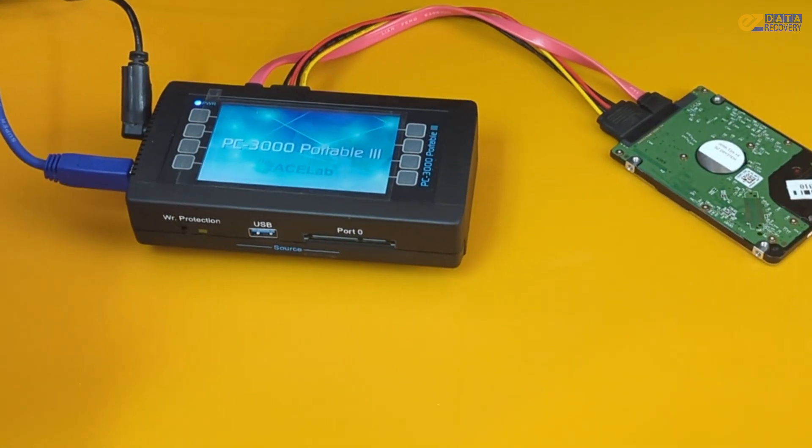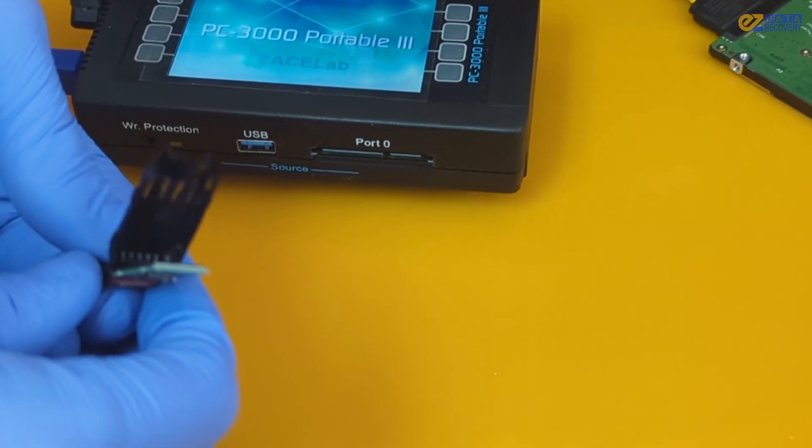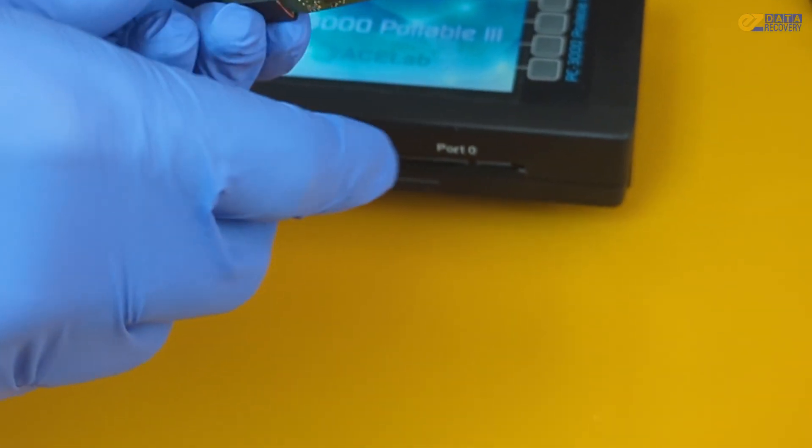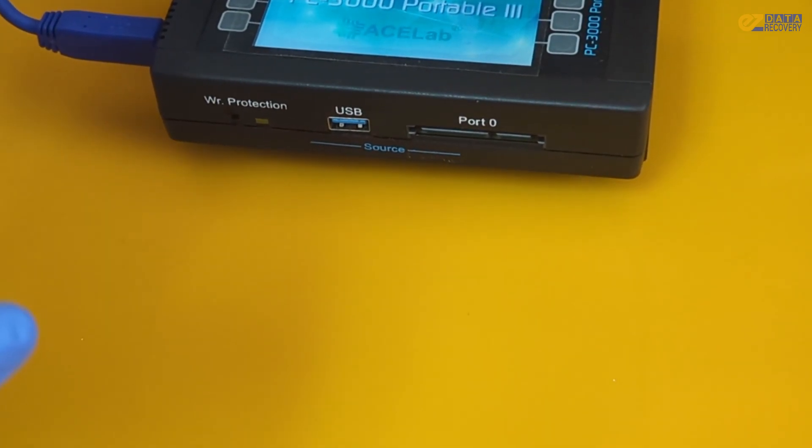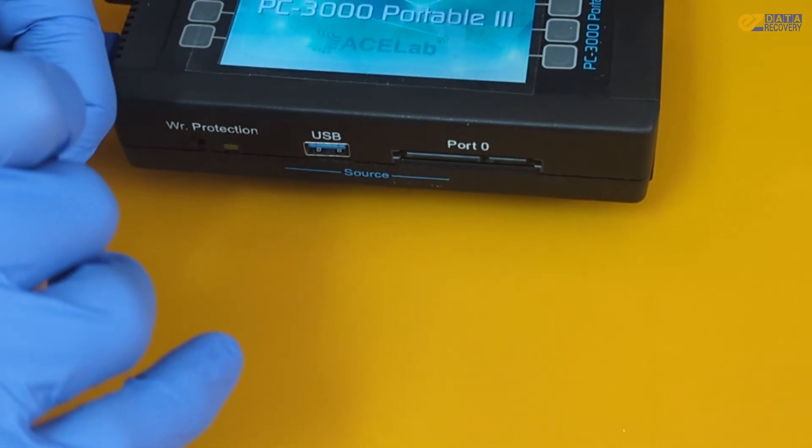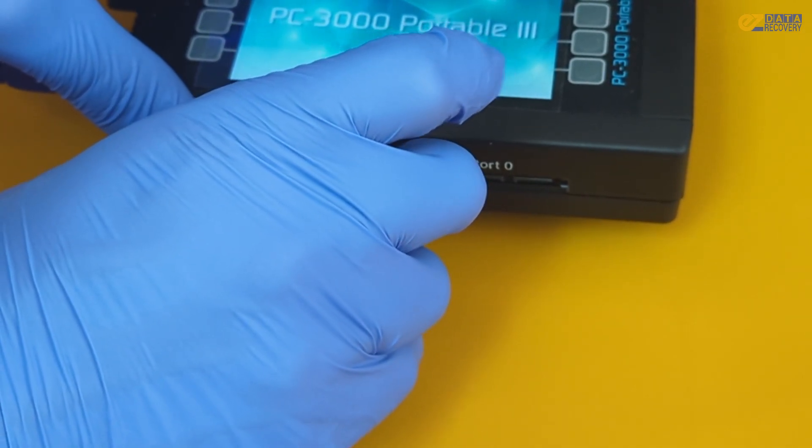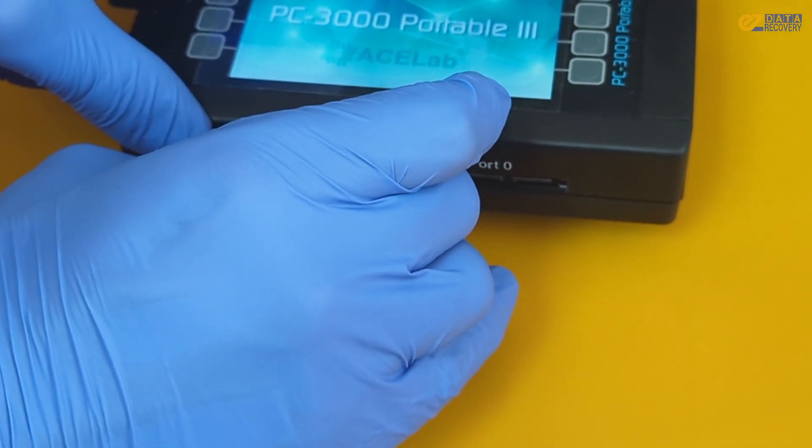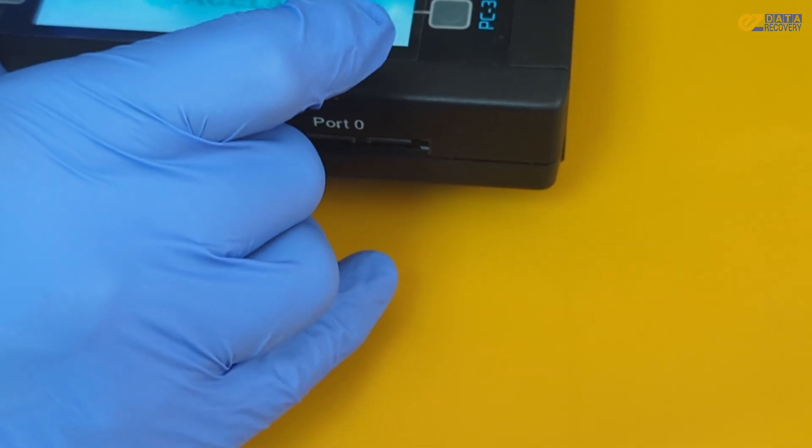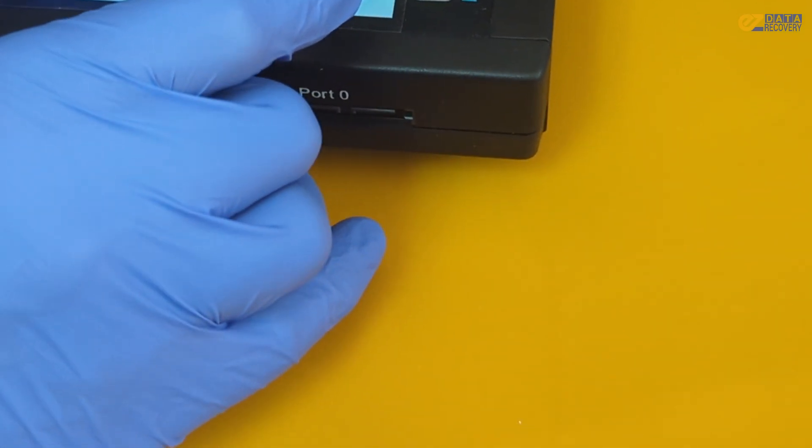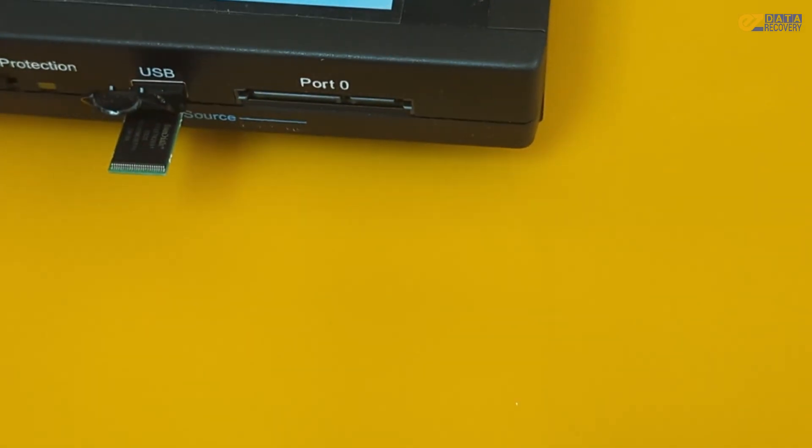From here, we're going to take it and very carefully plug it into the PC3000. The PC3000 is one of the professional data recovery tools we use here, and it is a godsend and one of our best tools. So we're going to slot that in there very carefully, taking our time not to damage any of the connections there. And once that's finished, we're going to use the professional data recovery software we have here to pull data directly from the drive.